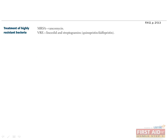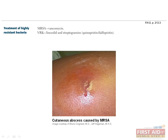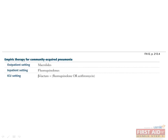Emergence of bacterial resistance to current antibiotics is a worsening problem in clinical settings. MRSA, or methicillin-resistant Staph aureus, is treated with vancomycin. Vancomycin-resistant enterococci, which are a type of group D streptococci, are treated with linezolid and streptogramins, which both have very broad-spectrum coverage. For empiric treatment of community-acquired pneumonia: outpatient settings use macrolid therapy; inpatient settings require fluoroquinolones; and in the ICU, patients should receive a beta-lactam drug in addition to a fluoroquinolone or azithromycin.